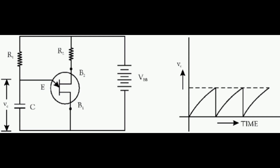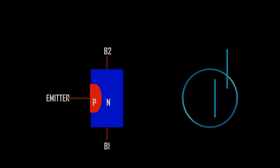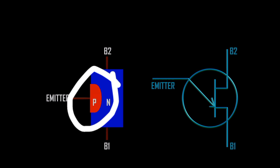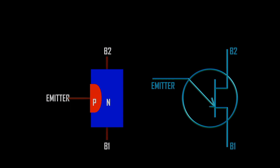UJT's construction consists of an n-type silicon semiconductor bar with electrical terminals on each end. The terminals of these connections are called base terminals, B1 and B2. Near to base B2, a P-N junction is formed between a P-type emitter terminal E. Since the device has three terminals and one P-N junction, for this reason it is called a unijunction transistor.